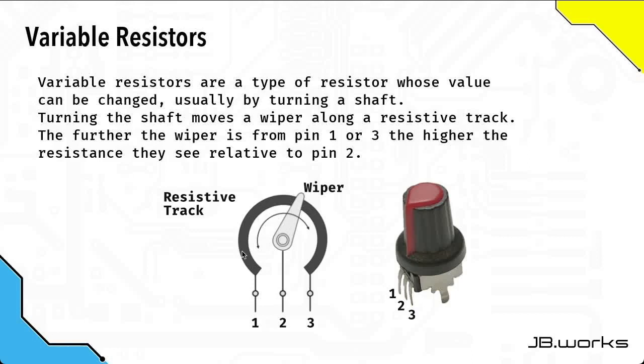So for example if we move the wiper all the way over here and we look at the resistance between pins one and two it'll be quite low because there's very little of the material between the wiper and the two pins.